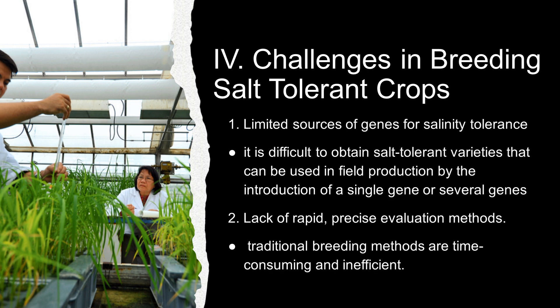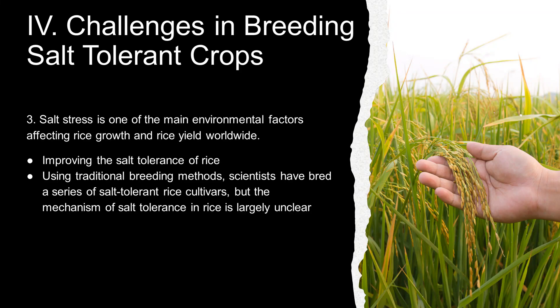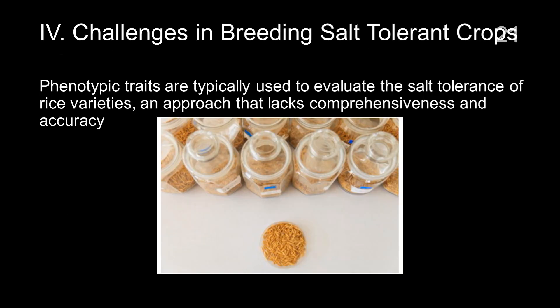Moreover, the choice of methodologies to screen for salt tolerance depends to some extent on the targeted production system as well as the crop itself. Lin et al. 2020 stated that using traditional breeding methods are time-consuming and not efficient. They also mentioned that salt stress is one of the main environmental factors that affects rice growth and yield worldwide. Scientists claim that the mechanism of salt tolerance in rice is largely unclear using traditional breeding methods. Furthermore, the phenotypic traits typically used to evaluate the salt tolerance of rice varieties lack comprehensiveness and accuracy, which may result in an assessment not consistent with actual field performance.